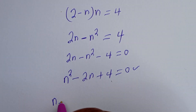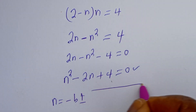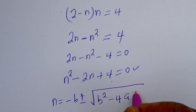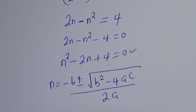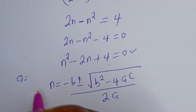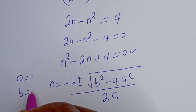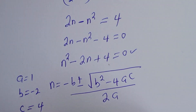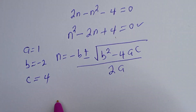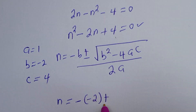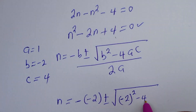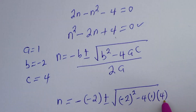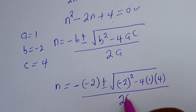From the quadratic general formula, n is equal to minus b plus or minus square root of b squared minus 4ac, all over 2a. From this equation, a equals 1, b equals minus 2, and c equals 4. We can substitute these values in.